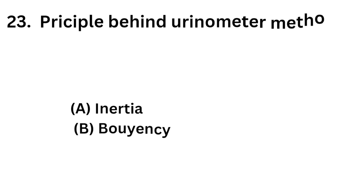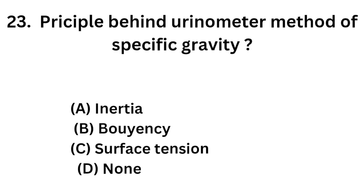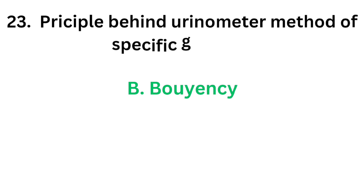Question number 23: What is the principle behind the urinometer method of specific gravity? The correct answer is Option B: Buoyancy. The principle behind the urinometer method of specific gravity is buoyancy.